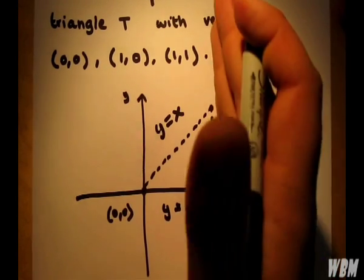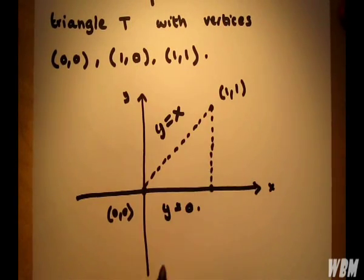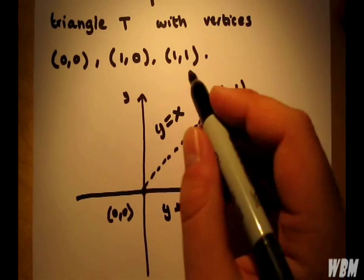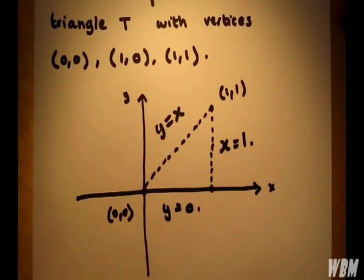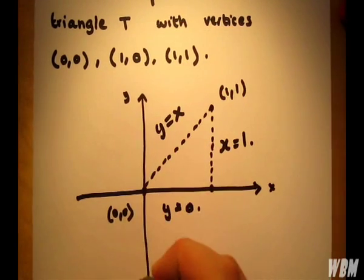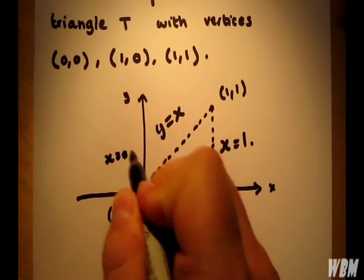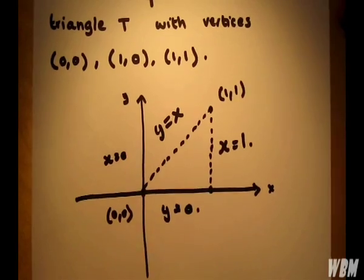Now with respect to x, notice that this line here is x equals 1, and this is x equals 0, which is the lower bound there.